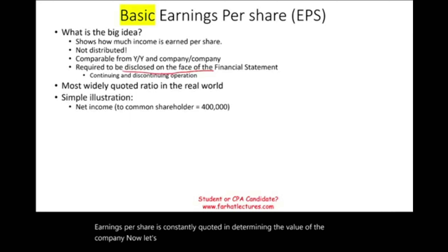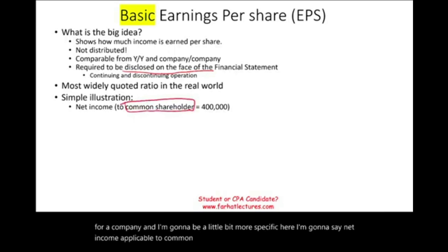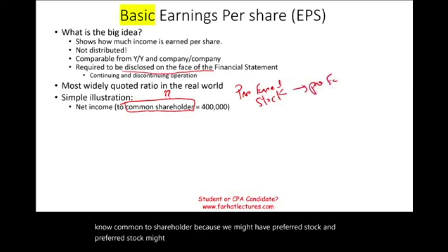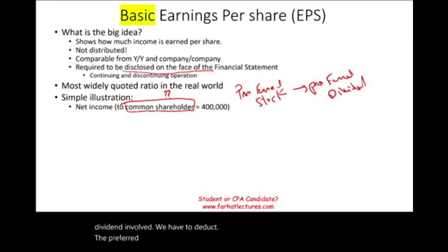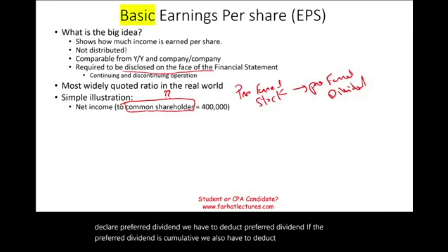Let's take a look at a simple illustration. Let's assume net income applicable to common shareholders is $400,000. Why did I add 'common shareholders'? Because we might have preferred stock, and preferred stock might get preferred dividends. So if there's any preferred dividend involved, we have to deduct the preferred dividend. If the preferred dividend is cumulative, we also have to deduct the cumulative. We will see this in an example shortly.